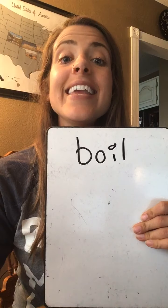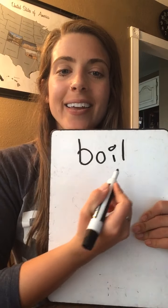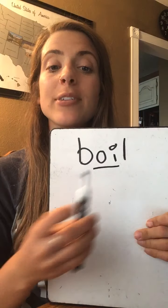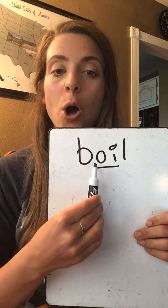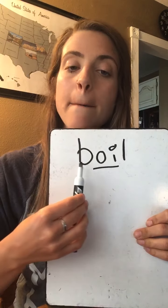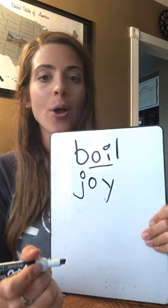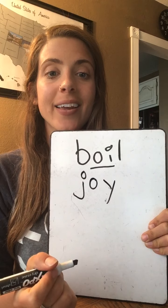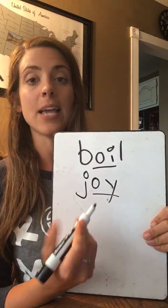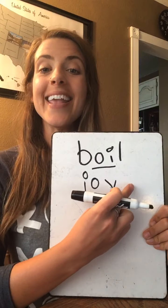I'm going to write some words and I want you to find the OI sound, then we will blend them together. So let's do — where's the OI? O-I or O-Y? Right there, O-I. So it says OI. Ready? B-OI-L: oil. Okay, let's try another one. Do you see O-I or O-Y? O-Y. Let's sound it out: J-OI: joy.